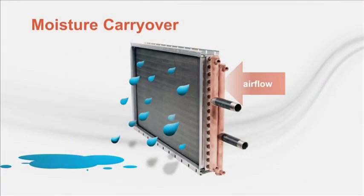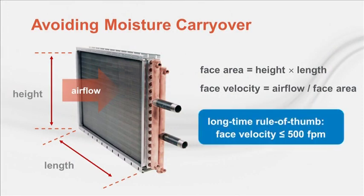In most applications, the cooling coil also dehumidifies as water vapor in the air condenses on the cold fin surfaces. The water drains down the coil surface, drops into the drain pan, and is piped away by the condensate drain line. When a coil dehumidifies, it must be selected to prevent moisture carryover. Too high a face velocity through a wet coil can result in condensed water being blown off the fin surfaces onto downstream components. A long-time industry rule of thumb for avoiding moisture carryover has been to select cooling coils for face velocity no greater than 500 feet per minute at design airflow.